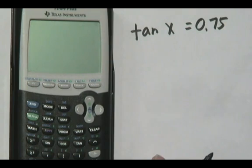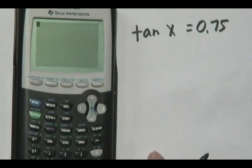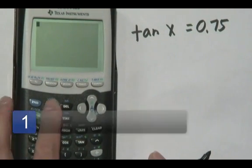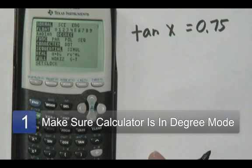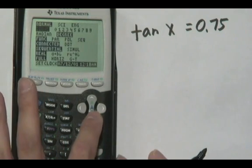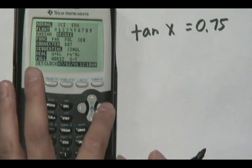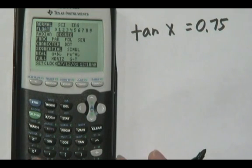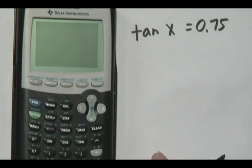Now in any calculator what you have to be sure of is, using a graphing calculator as an illustration, under mode be sure that it's in degree mode. Now in my illustration you see that it is, but if your calculator is not, scroll down to degrees and press enter which is at the bottom of your calculator and it will be in degree form, and then just press clear to go back to the main screen.